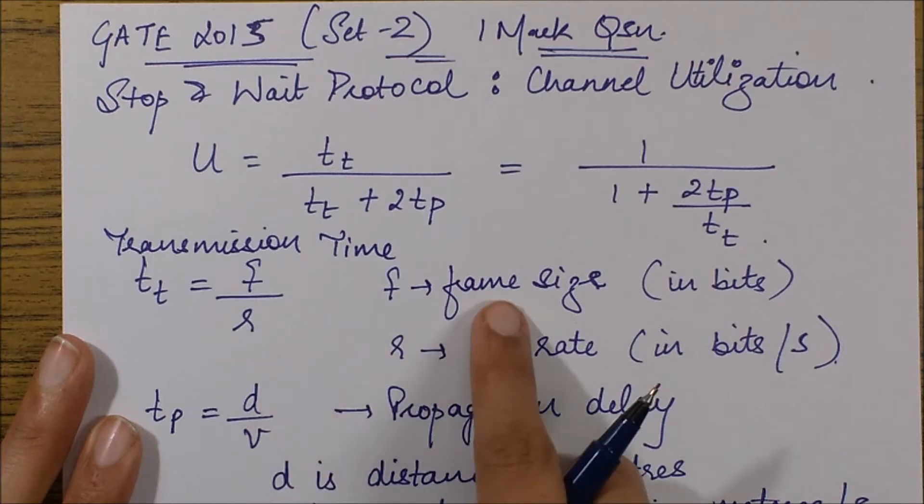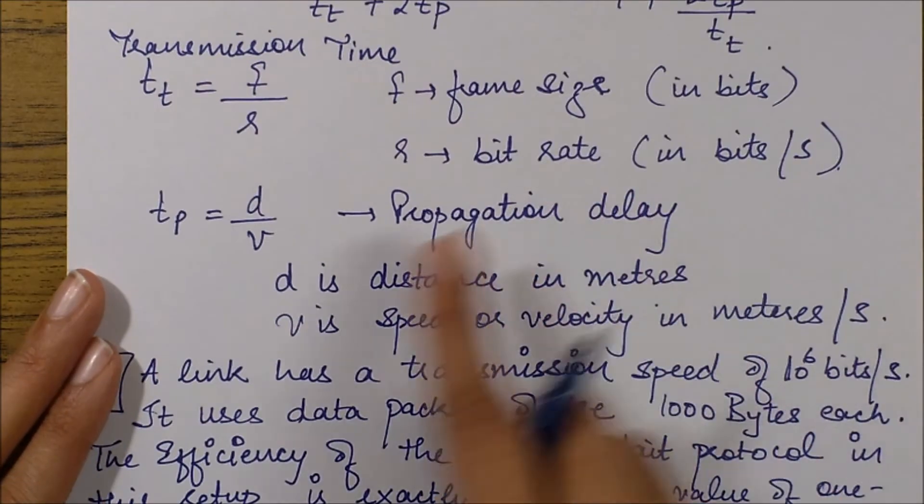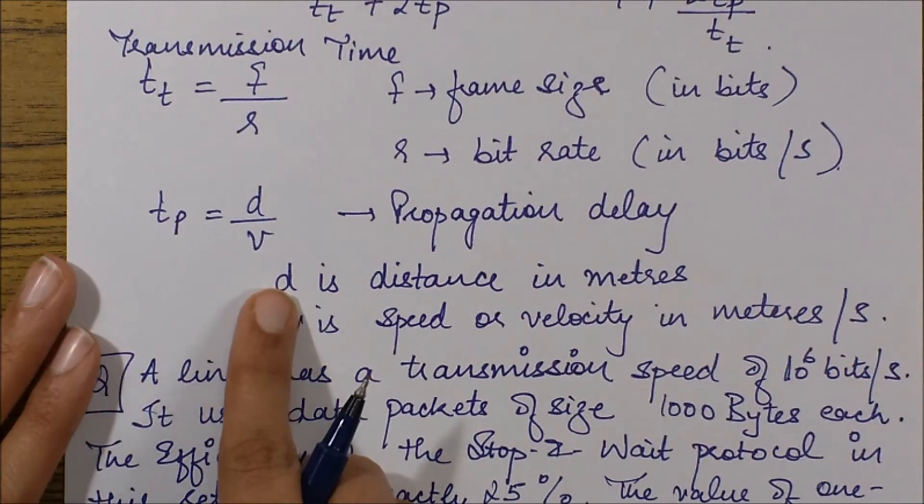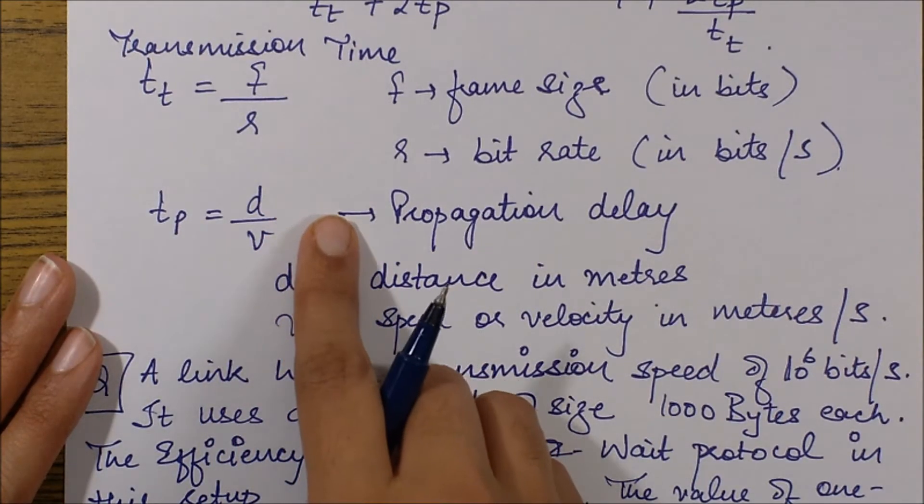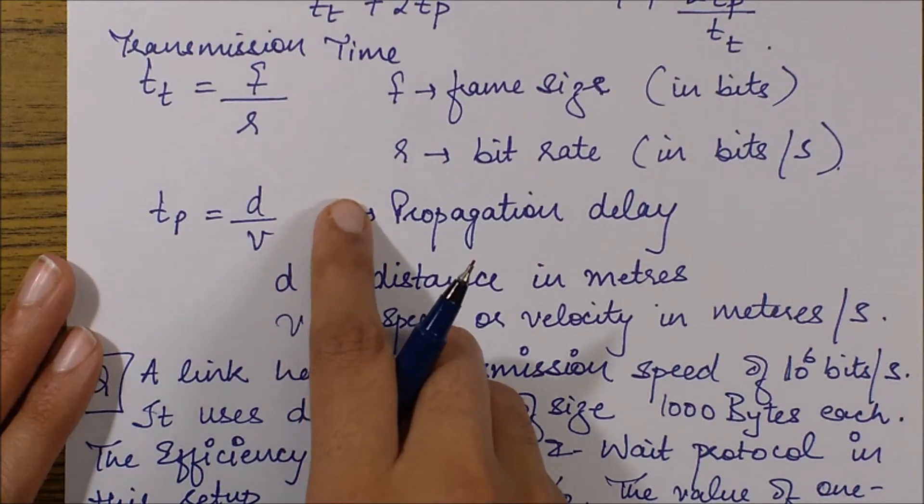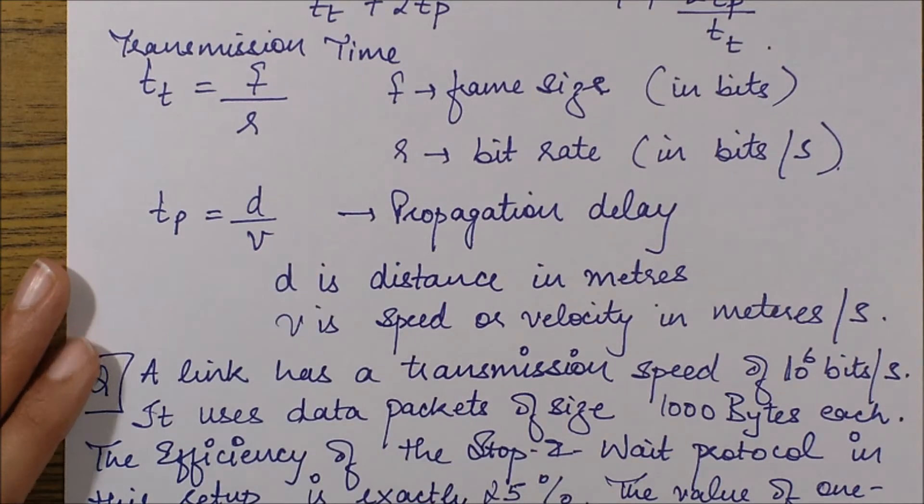Transmission time tt is f by r, where f is the frame size in bits and r is the bit rate, also referred to as bandwidth many times in questions. tp is the propagation delay which is d by v - d is the distance in meters and v is the speed or velocity in meters per second.